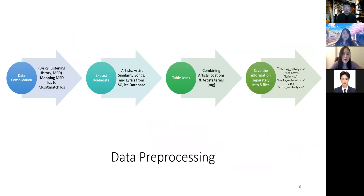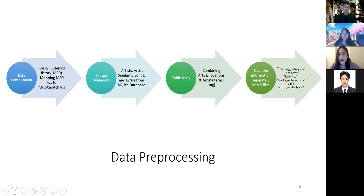For data preprocessing, first we did data consolidation by mapping 1 million song IDs to Music Match IDs. Then we extract metadata of artists, artist similarities, songs, and lyrics from a SQLite database. Then we perform some table joins between artist location and artist terms, and we save those five files separately.